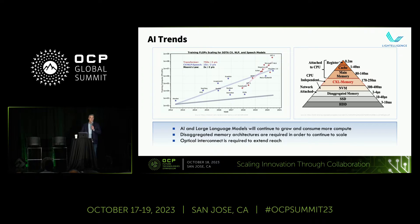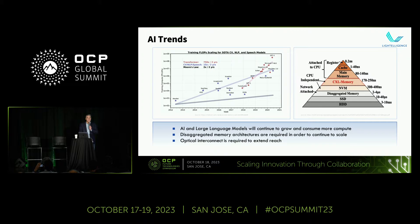What we're also seeing — and this chart is getting a little old from this show — is that with large language model growth, there appears to be no end to the growth of these models. As a result, disaggregation for memory is required so that we can meet the needs of AI model processing.